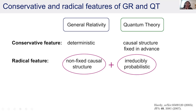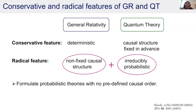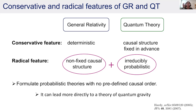The proposal of Lucien Hardy, while pointing out these features, is that instead of going directly to a theory of quantum gravity, we should first formulate probabilistic theories with a non-fixed causal order — take these two radical features and make a general formulation — and after that it could lead more directly to a theory of quantum gravity.